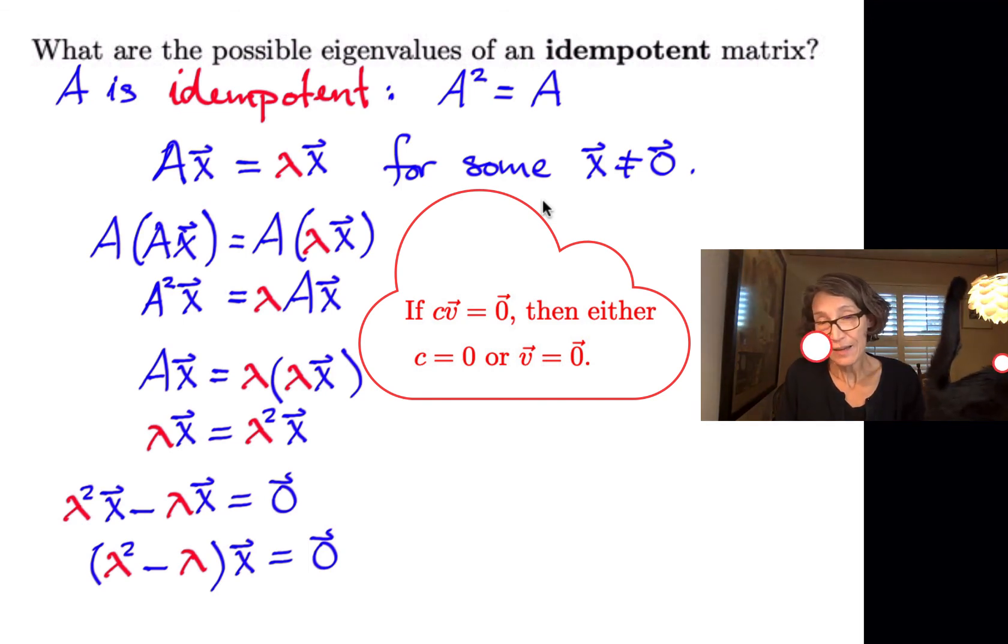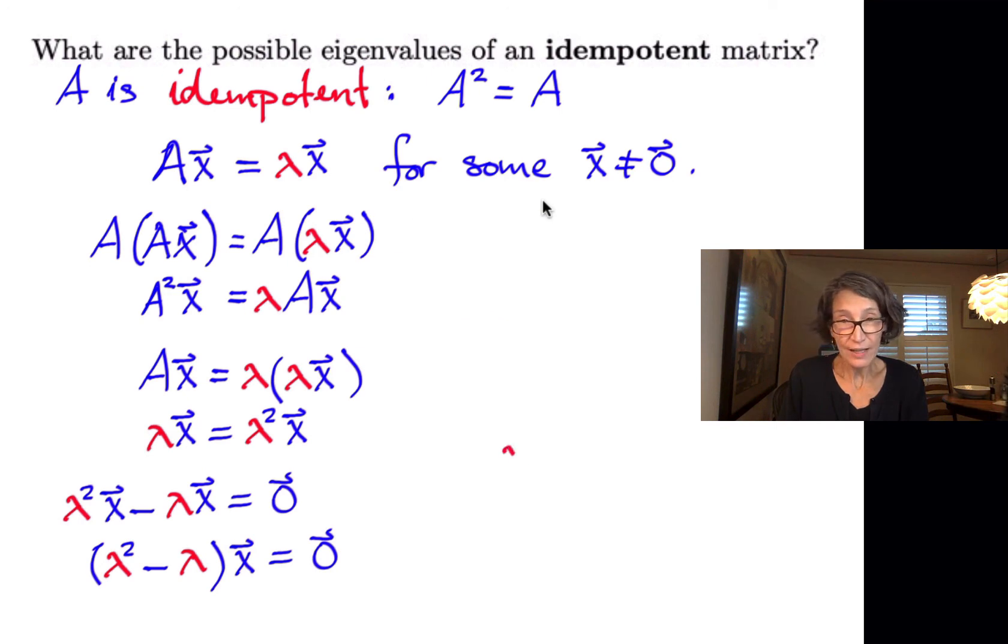Well, we know X can't be the zero vector because it's an eigenvector. So we must have that that scalar is zero. So lambda squared minus lambda is the scalar zero.